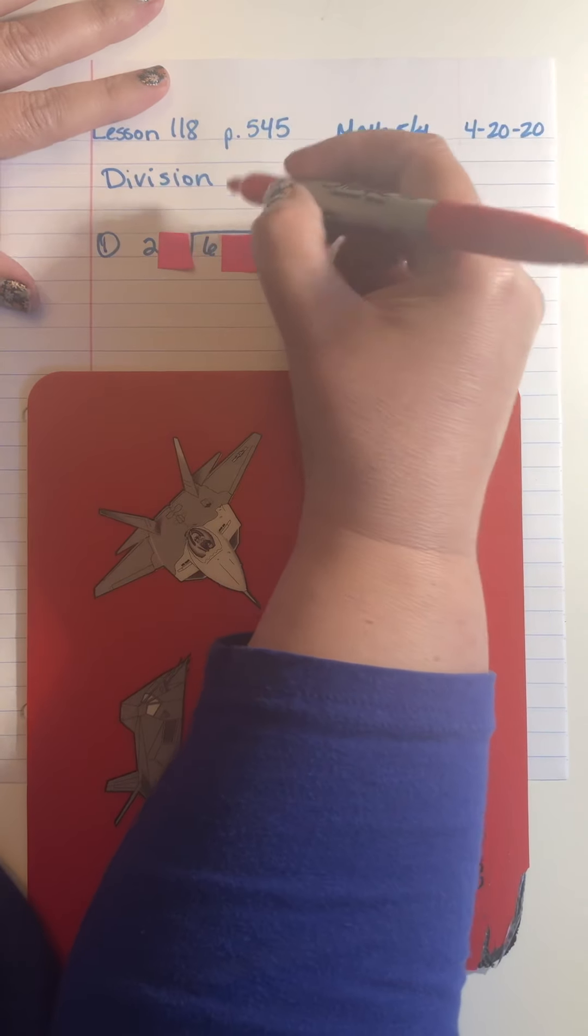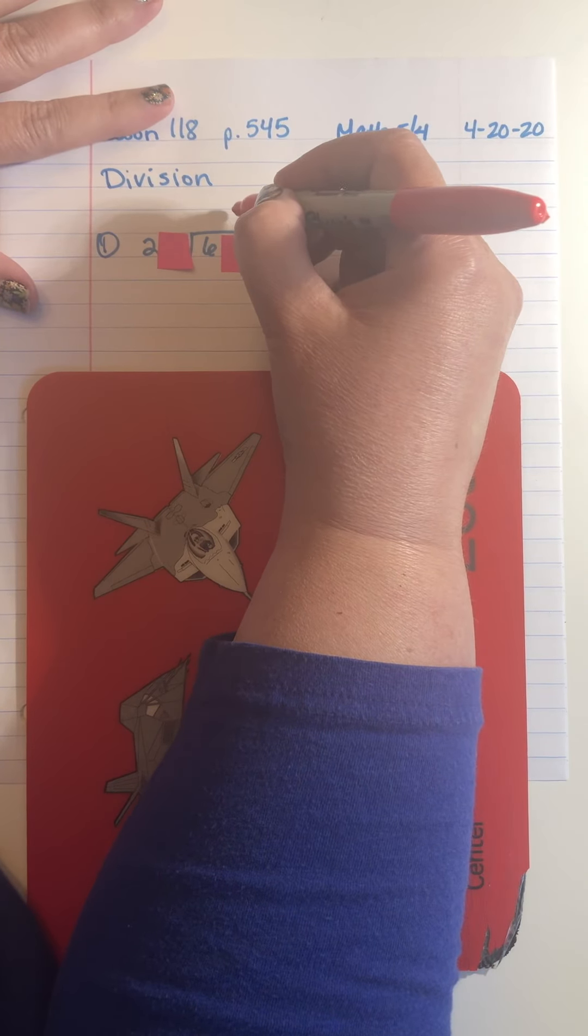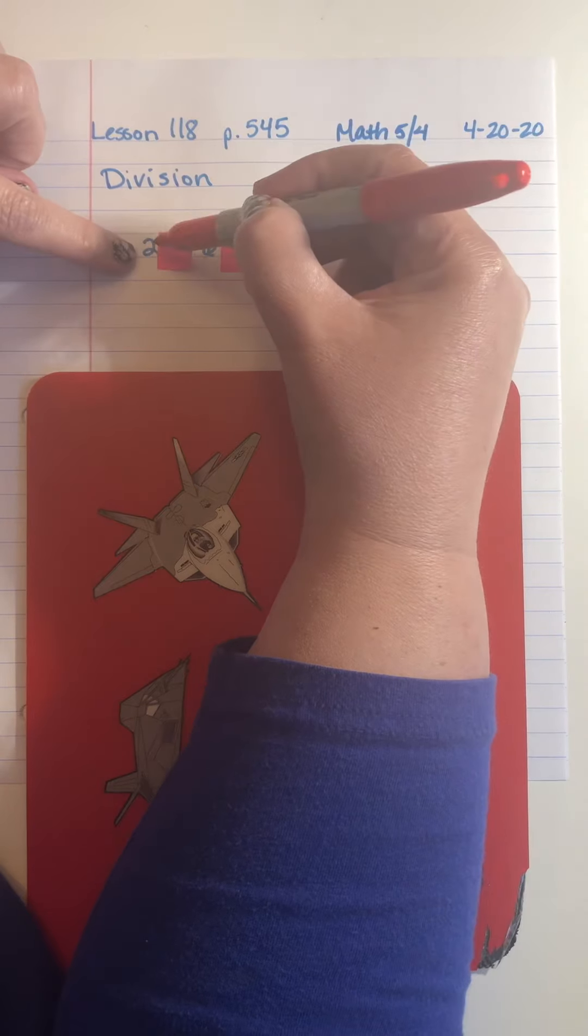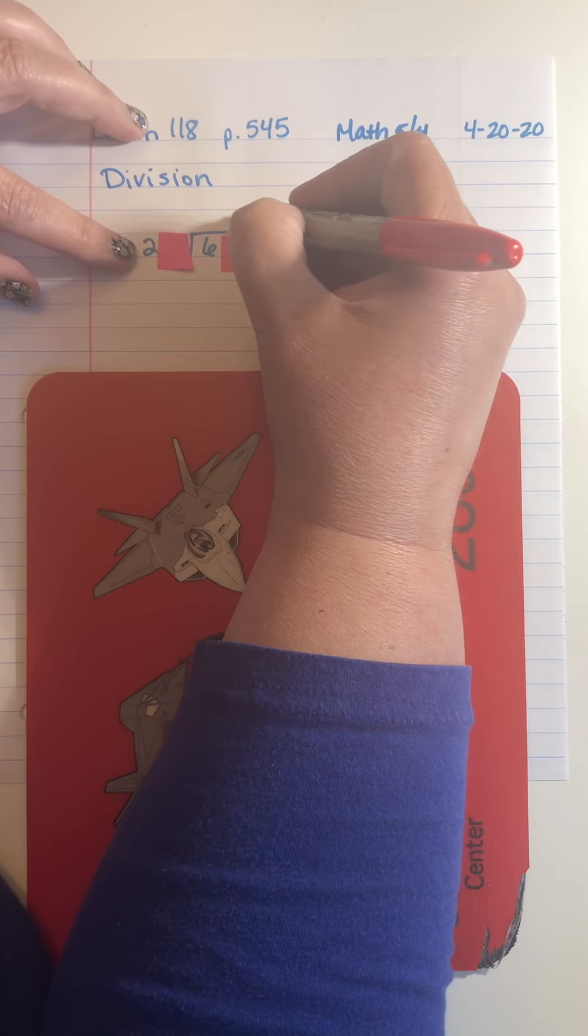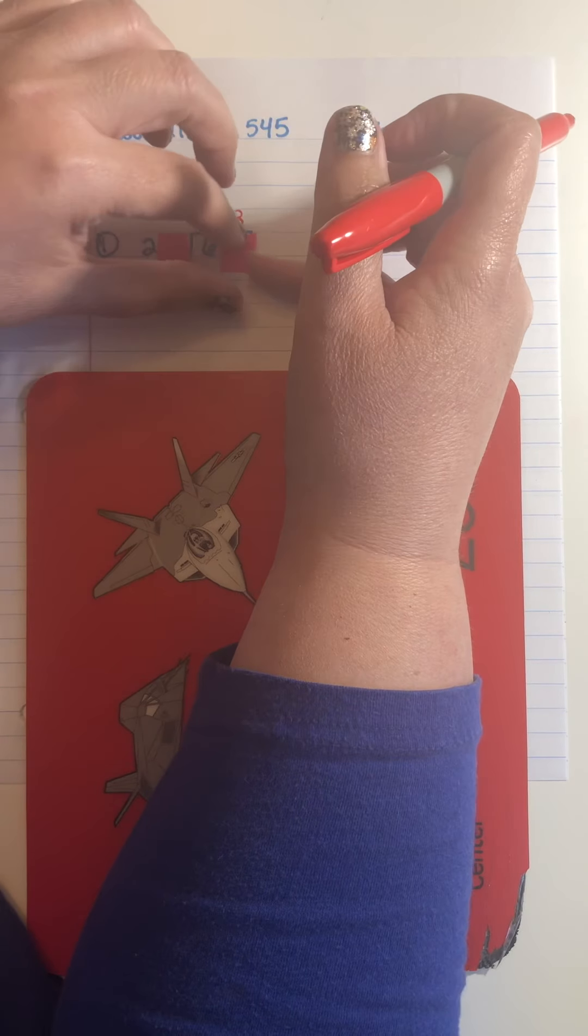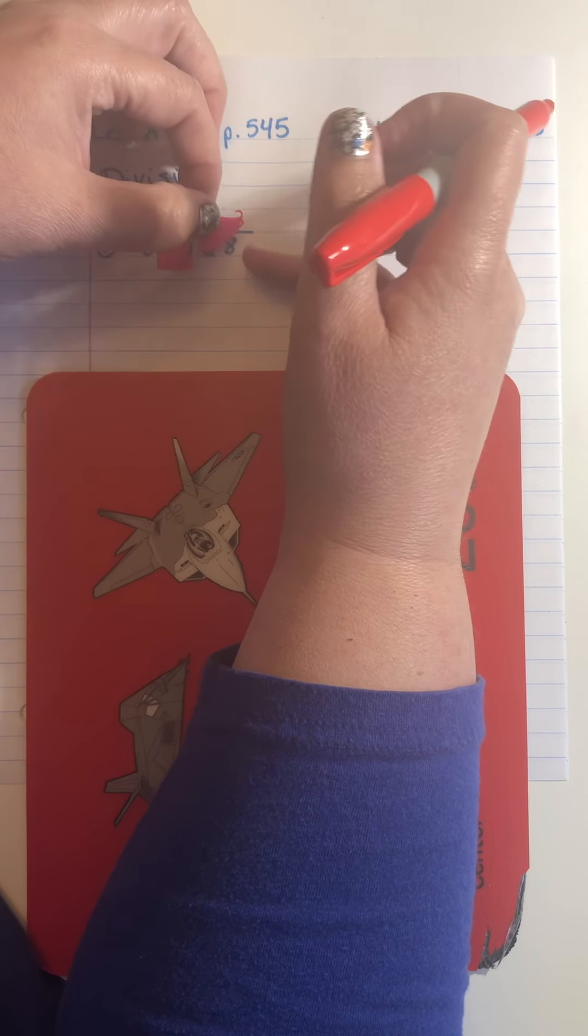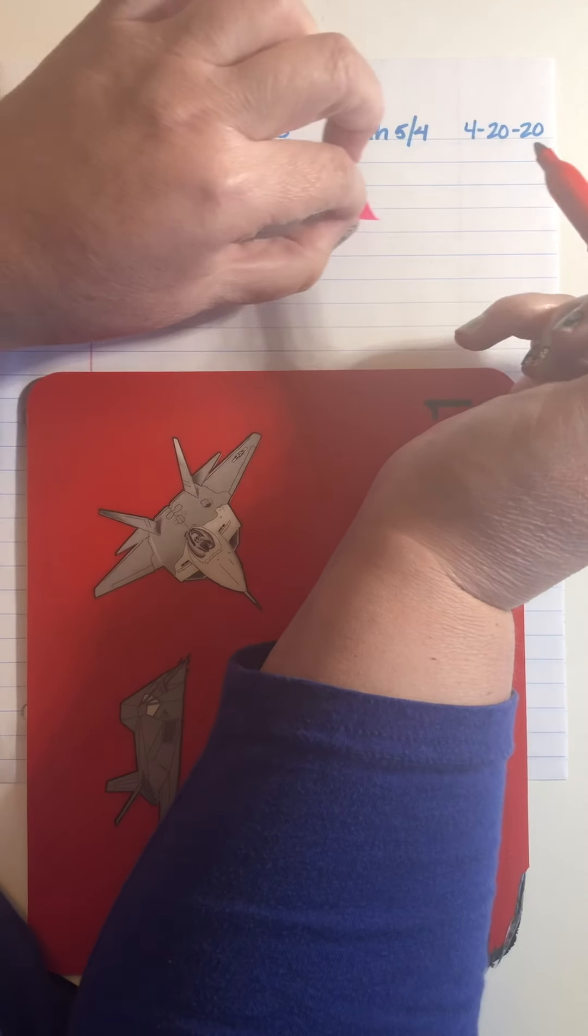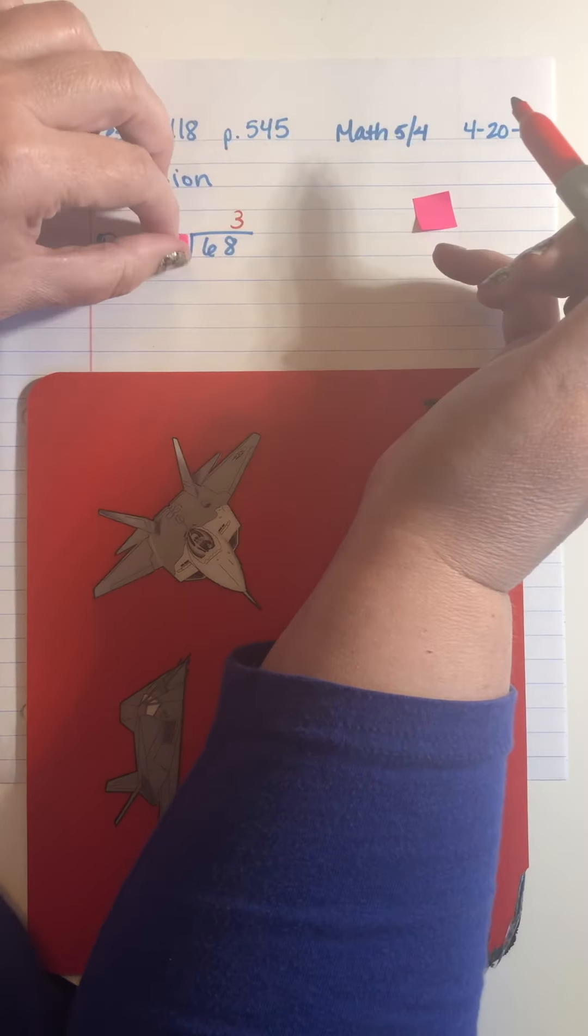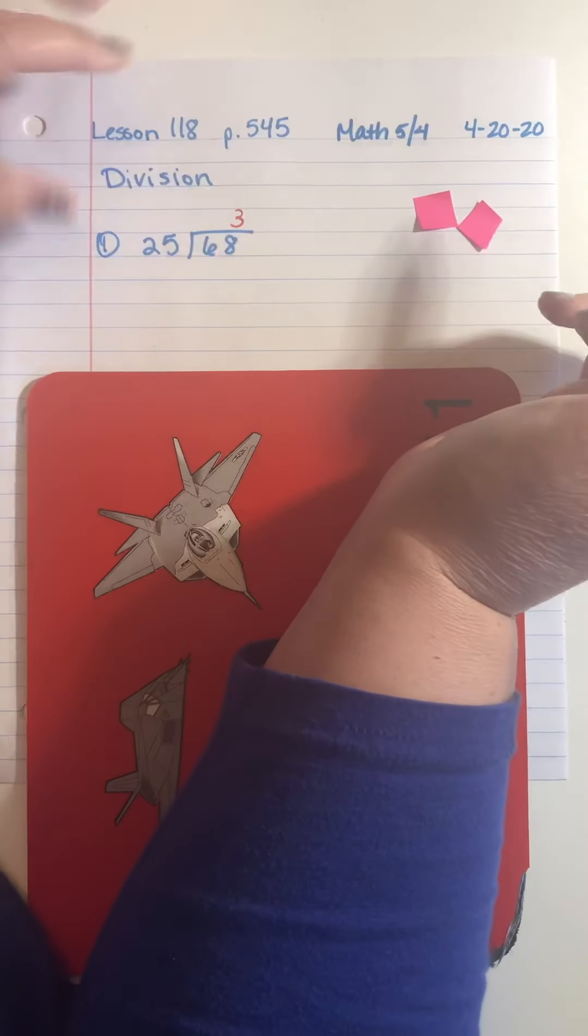So six divided by two, I'm going to start down that path and I know that that'll be three. Now notice, I'm not writing that over my six. I'm going to write it over my last digit, the digit I'm actually dividing into, which is 68. So I wrote it over the eight, not the six. It's very important. I'm going to put these aside for now because I need to be able to see my digits now.